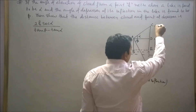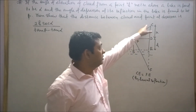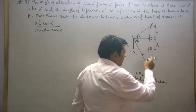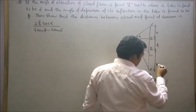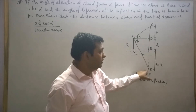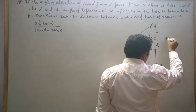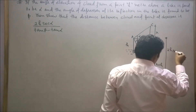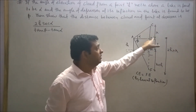Let CD equal X. So the height of the cloud from the lake will be X plus H, and F will be at X plus H. Therefore DF equals 2H plus X. Now consider right angle triangle CDA.